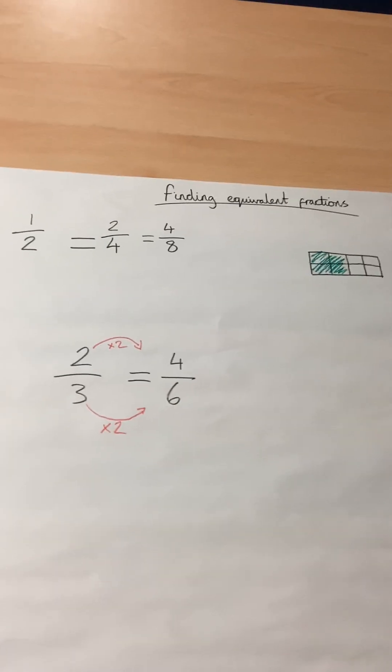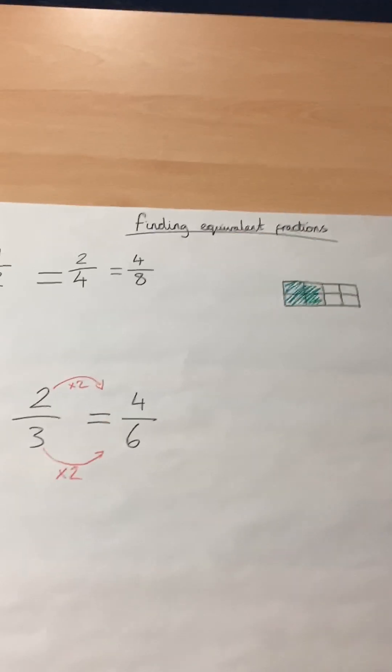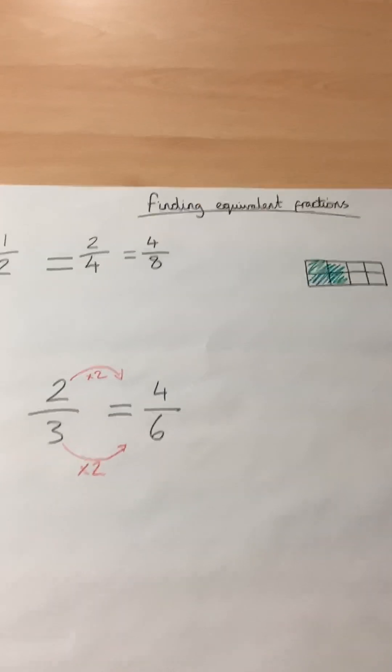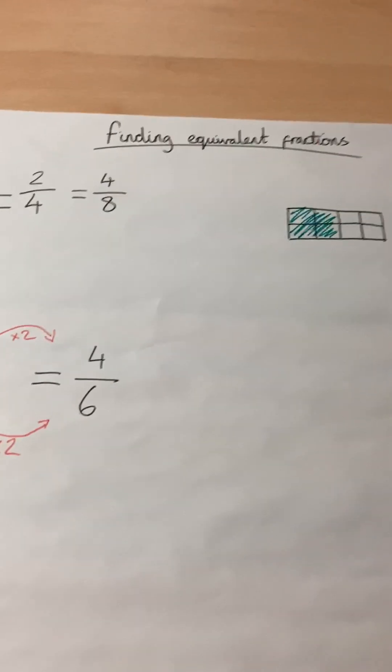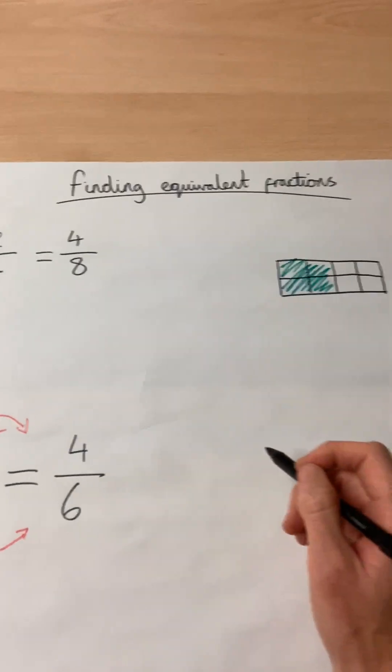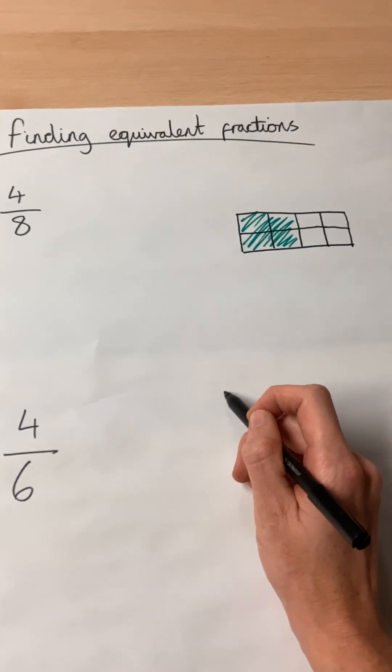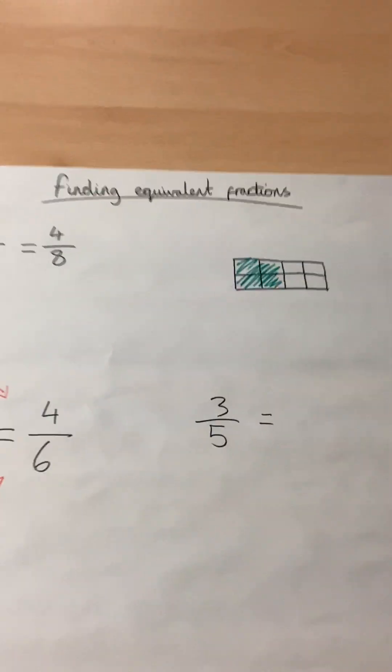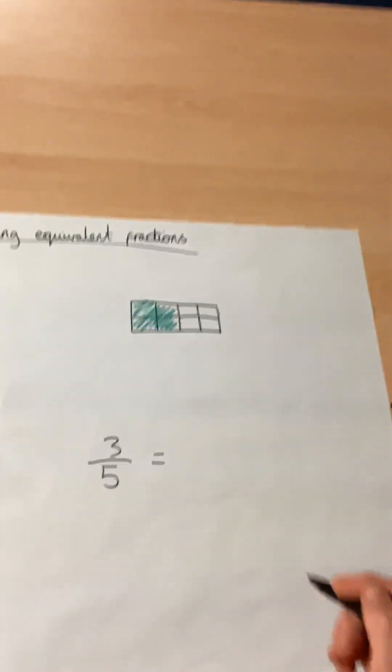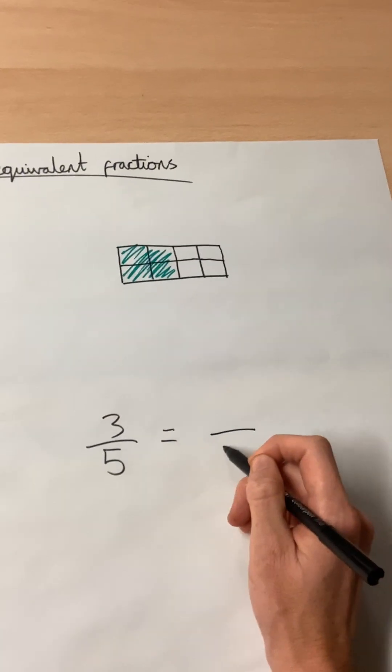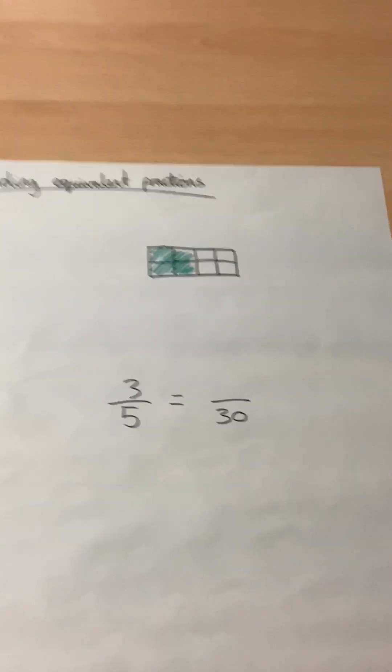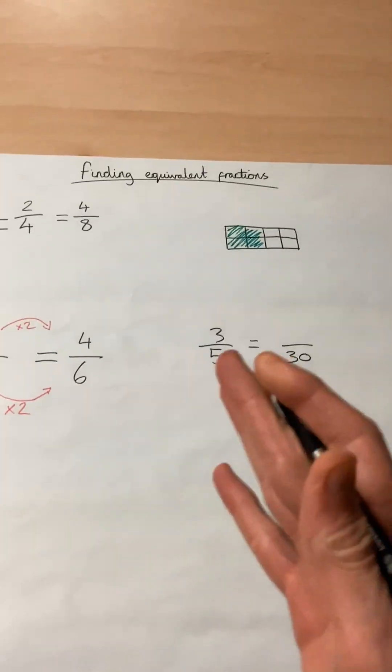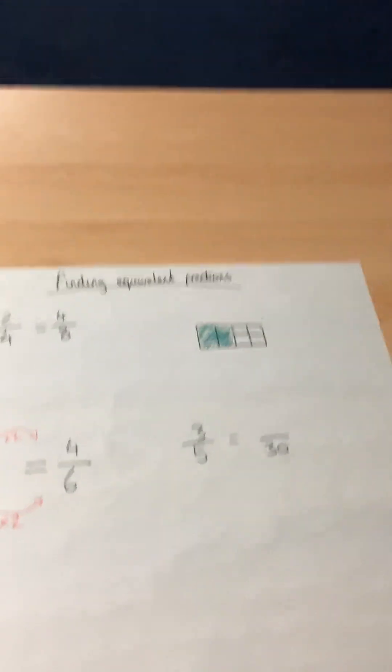I'll demonstrate this with some bigger numbers, make them slightly more challenging so that we can see how it works and then set you some challenges to try. If I had three fifths, but my question involves something where the fraction is 30 on the bottom, so 30 is the denominator. I need to turn my three fifths into thirtieths.